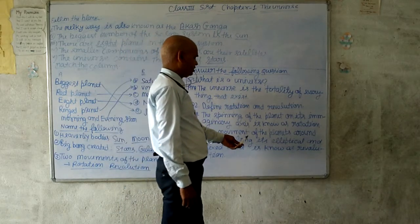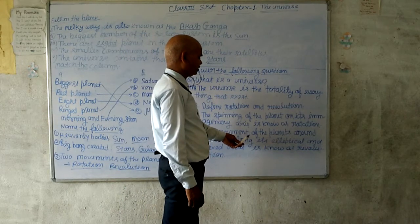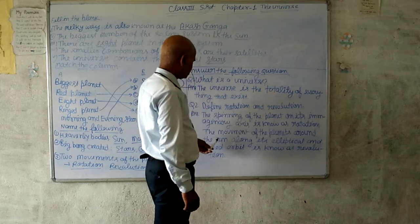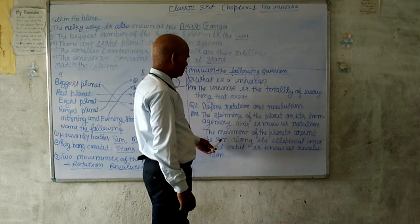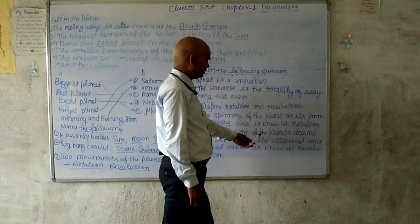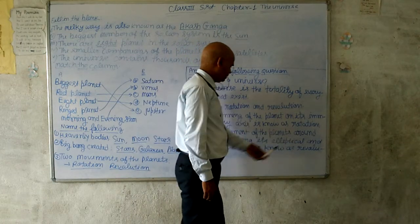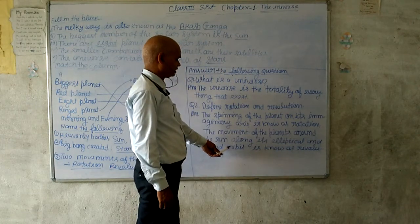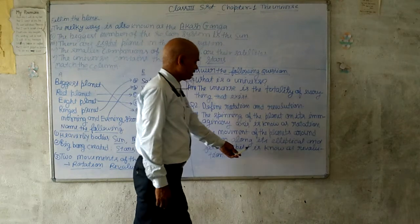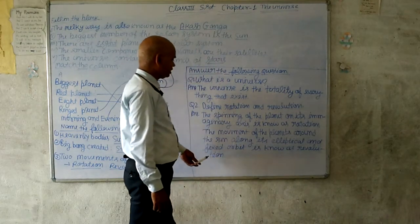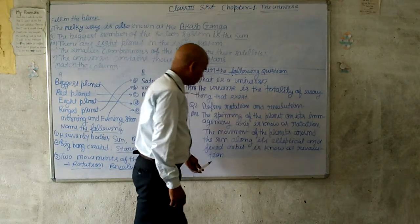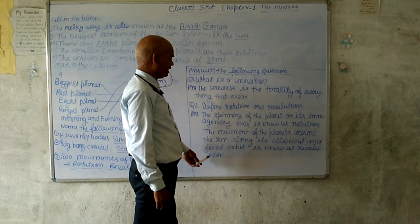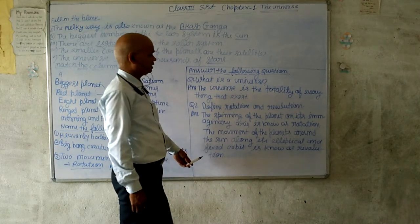The movement of the planet — जो planet की movement होती है — around the Sun — Sun के चारों तरफ — this is known as Revolution. उसको Revolution के नाम से जानते हैं।